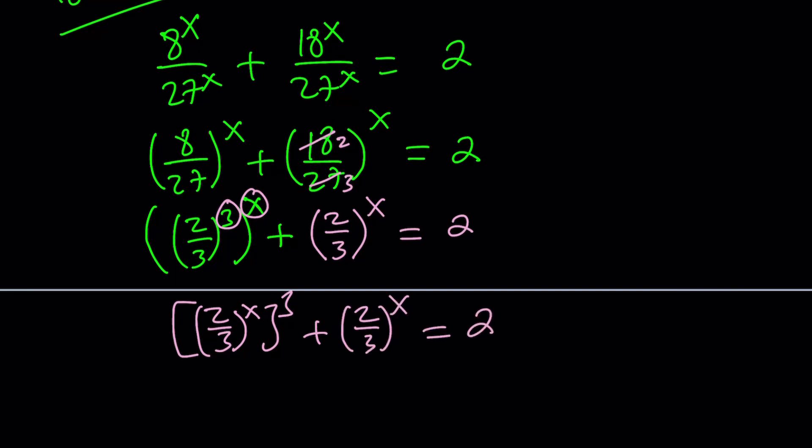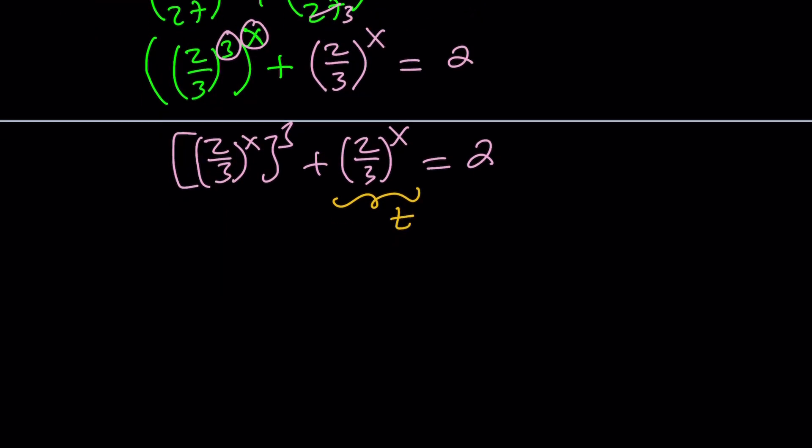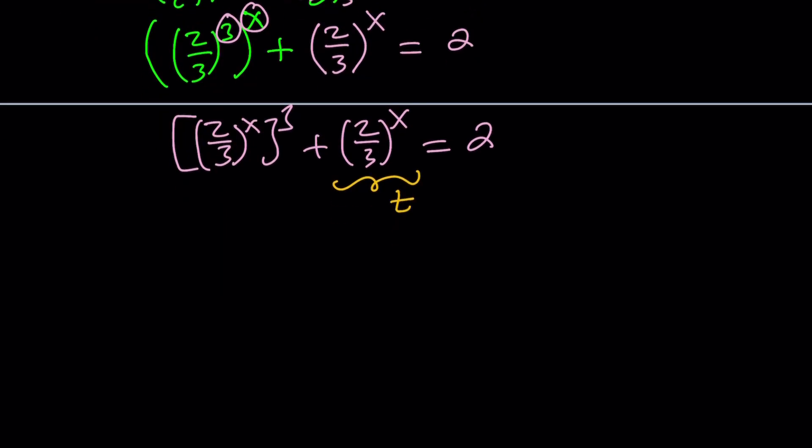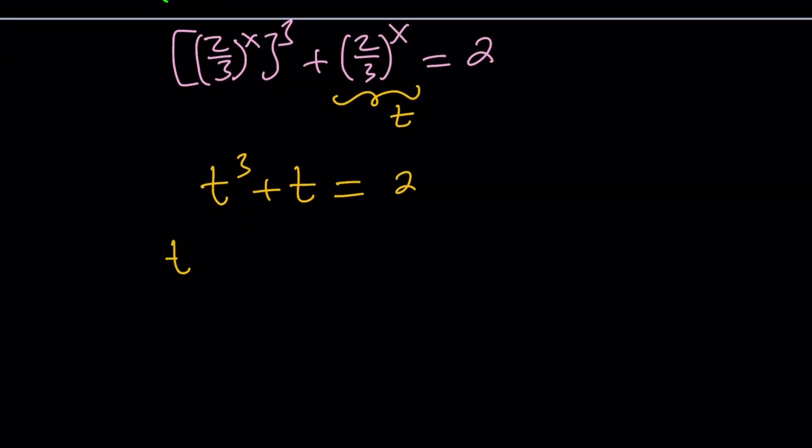And what does this tell you? This tells you that you can use substitution. Let's go ahead and call this something and let's make sure we don't mess up at the end. Let's call this t. So we get t cubed plus t equals 2. Now, this equation is pretty easy to solve. You probably noticed that t equals 1 is a solution because if you look at the sum of the coefficients, the sum is 0. So that works.